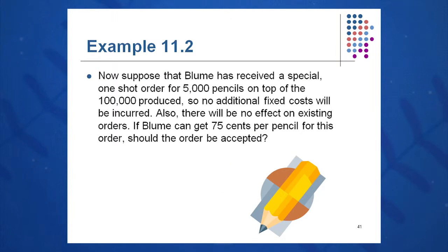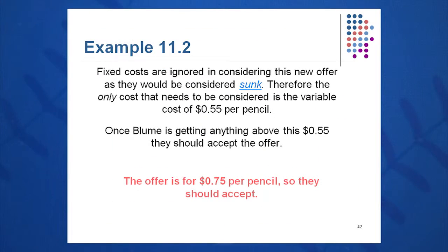Now suppose you get a one-time special order for 5,000 more pencils on top of the 100,000, with no additional fixed costs. Should we take the offer if we can get $0.75 per pencil in selling price? We calculate the contribution margin: selling price minus variable cost — $0.75 minus $0.55 — giving $0.20 extra per pencil. There are no fixed costs to worry about; fixed costs are considered a sunk cost in this case, so we move forward with that extra offer.